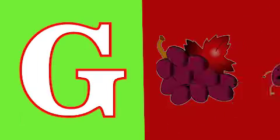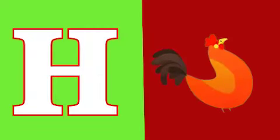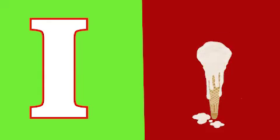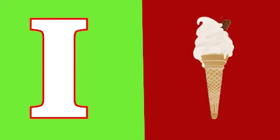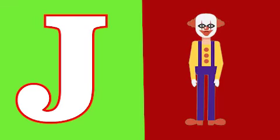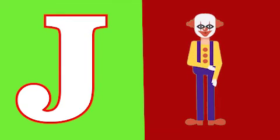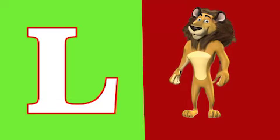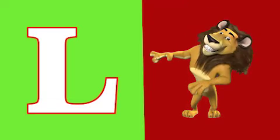G for grapes, H for hen, I for ice cream, J for joker, K for kite.